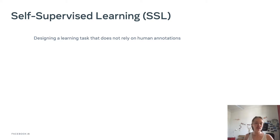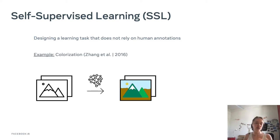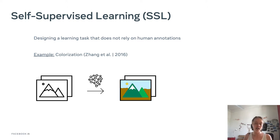We want to use self-supervised learning, which consists in designing a learning task that does not rely on human annotations. A good example is colorization, proposed in 2016, where a neural network is trained to colorize images. To train on this task, you don't need any human annotations because the target is directly the RGB information already in the database. The hope is that if the network is good at this task, it will have acquired a good understanding of the scenes and objects in the images.